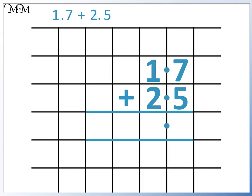We work from right to left and start by adding the digits in the tenths column. 7 plus 5 equals 12. We write the 2 in the tenths column and carry the 1 over to the units column. Next we add the digits in the units column. 1 plus 2 equals 3 plus the 1 that we carried equals 4. So the answer is 4.2.